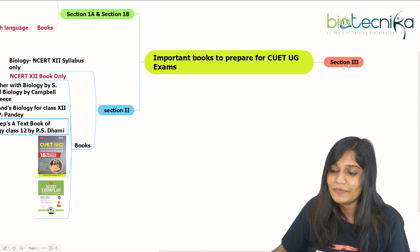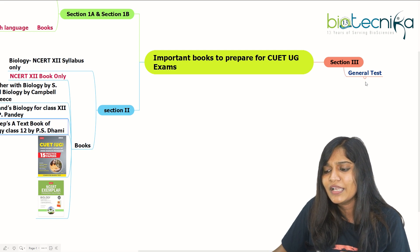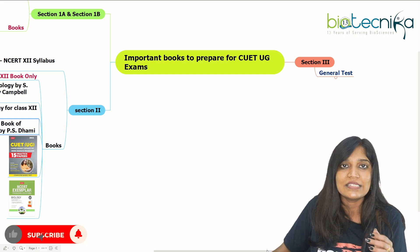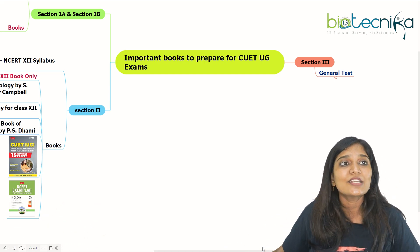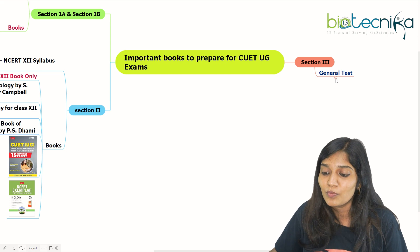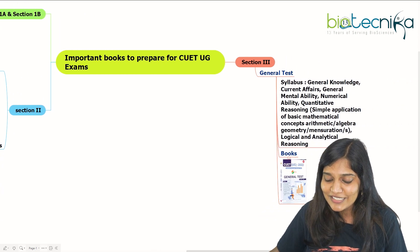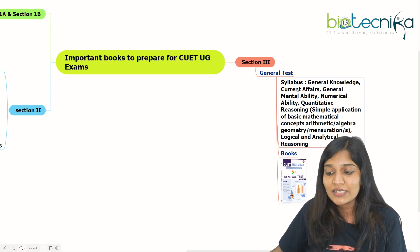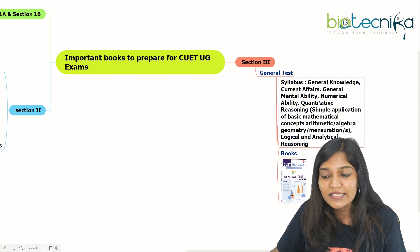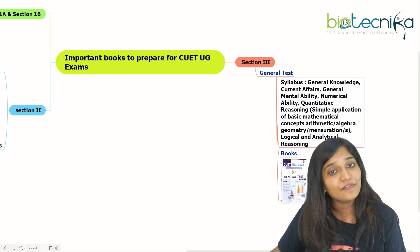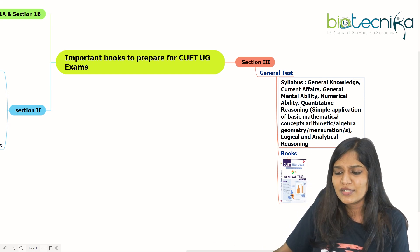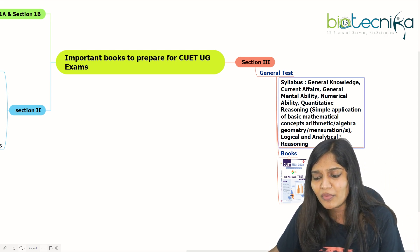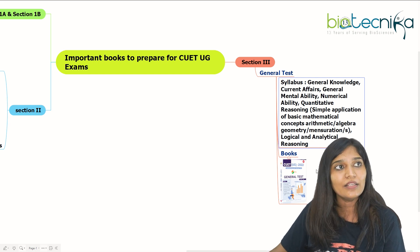Section 3 is a general test. Section 1 is for vocabulary testing, Section 2 is for your subject, and Section 3 is for the general test. The general test has all aptitude questions — general knowledge, current affairs, general mental ability, numerical ability, quantitative reasoning like simple calculations up to 8th or 9th grade level, basic mathematics, geometry, mensuration, and logical and analytical reasoning.